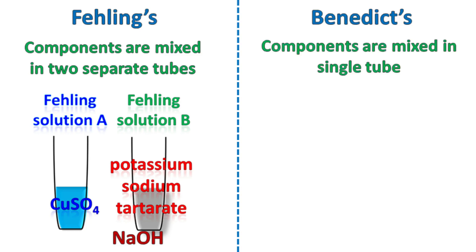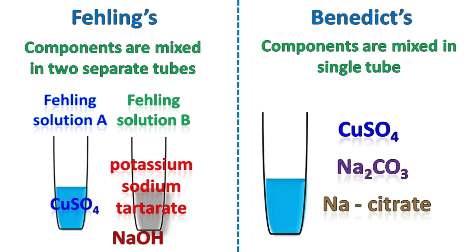On the other hand, Benedict's test uses a solution of copper sulfate, sodium carbonate, and sodium citrate, all mixed in a single tube. The alkali used in Fehling's test is sodium hydroxide, while the alkali used in Benedict's test is sodium carbonate.